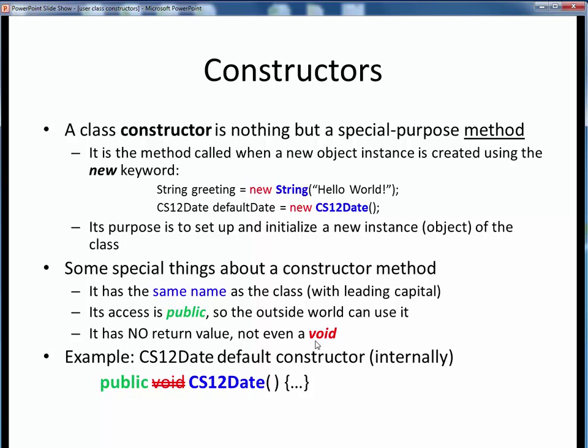For example, in the CS12 date teaching class that I created, here is what the default constructor interface looks like. It has a public access specifier, followed by the constructor method name, which is identical to that of the class, followed by any input arguments within parentheses. But here, for a default constructor, there are none. And then, of course, the body of the method within braces.